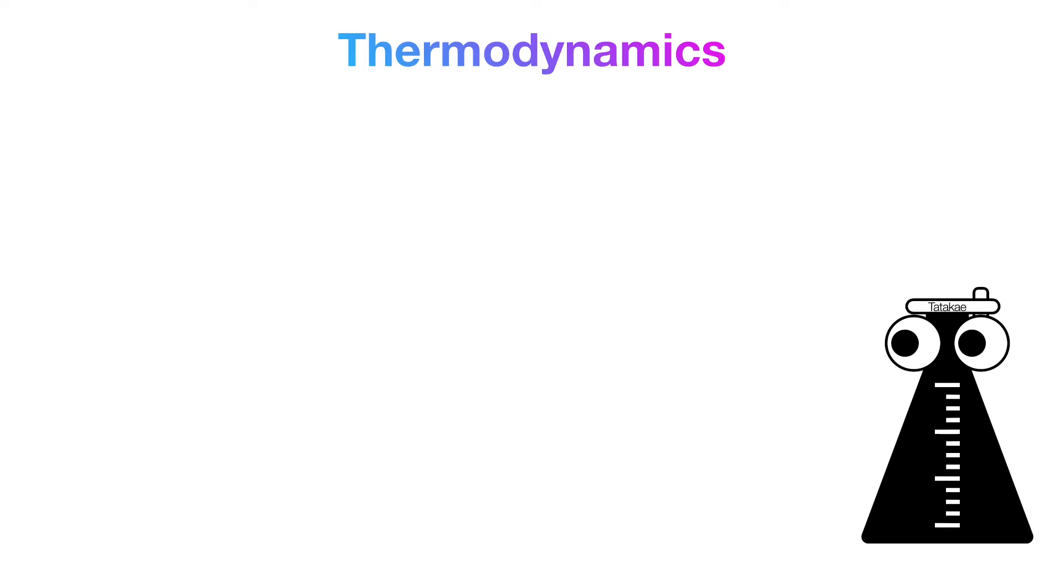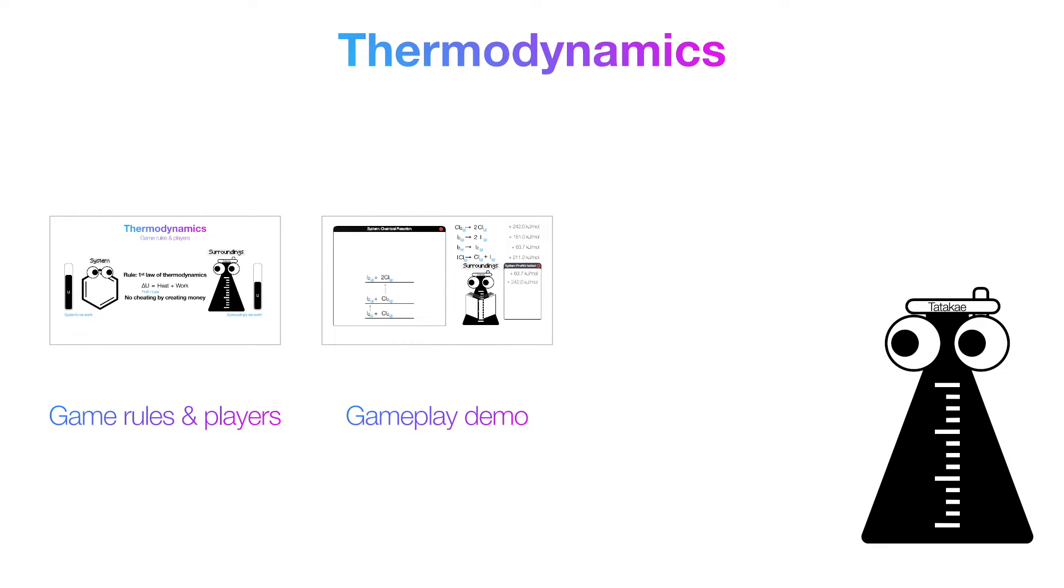In this video, we'll be going over three things. Like any other game, we gotta lay out the players and rules first. Then we're going to demonstrate how our game works for chemical reactions, and lastly, bridge our understanding of this game into measurements related to chemicals in real life. By the end of this video, we'll also intuitively understand why chemists came up with and prefer to use the idea of enthalpy when they could have easily just used the idea of energy instead. Please like and subscribe.